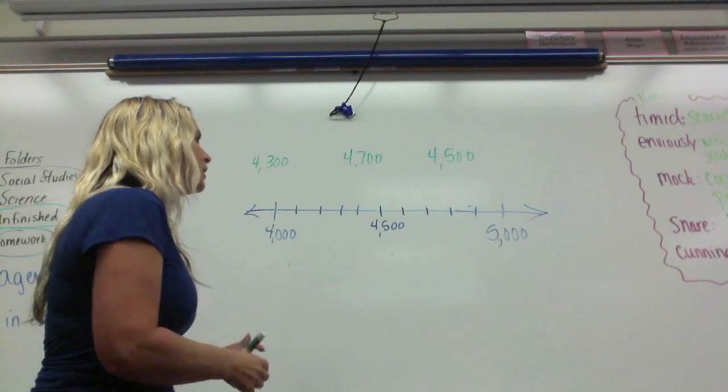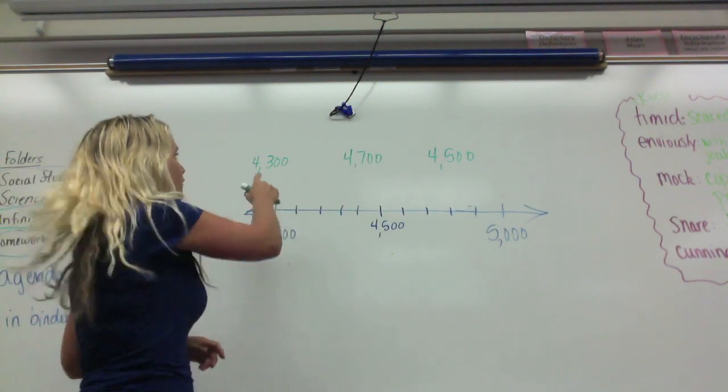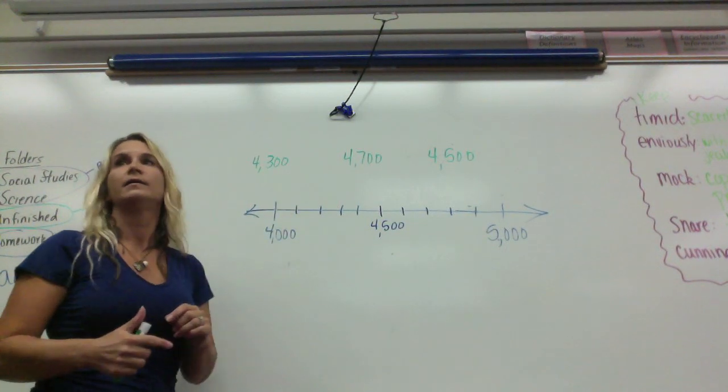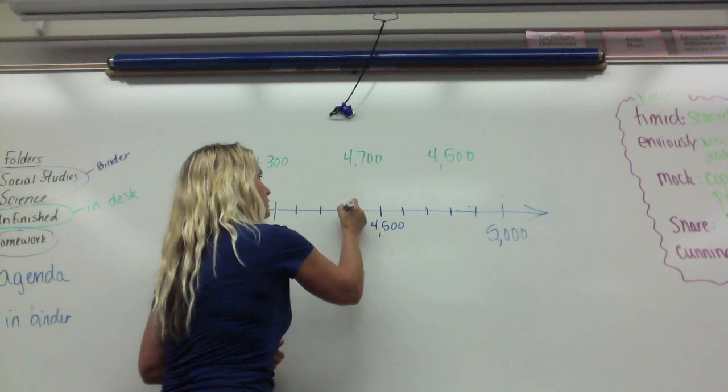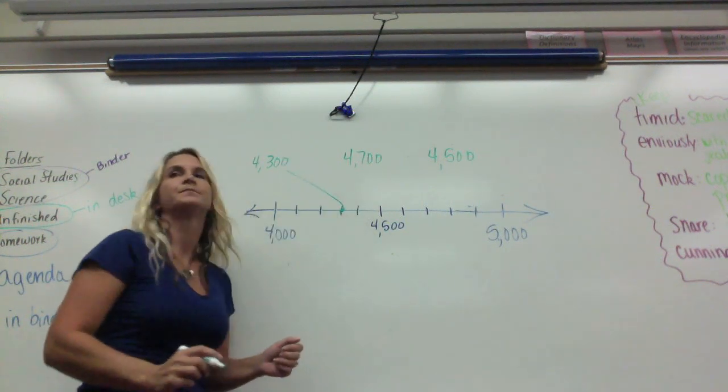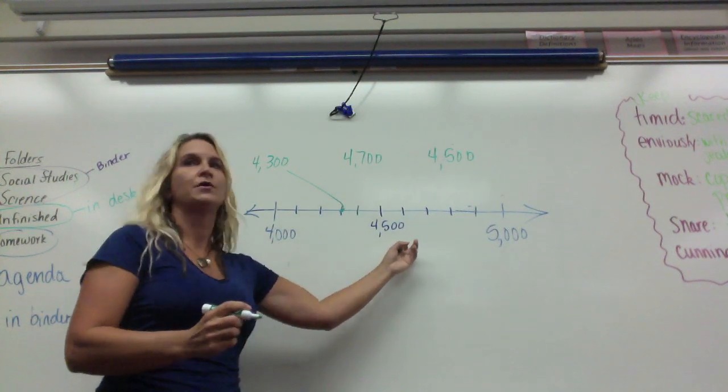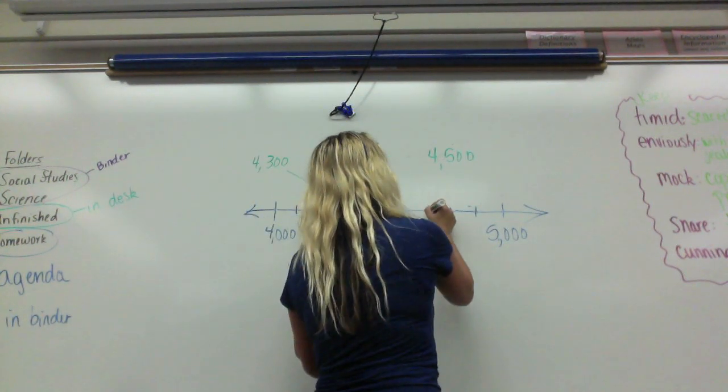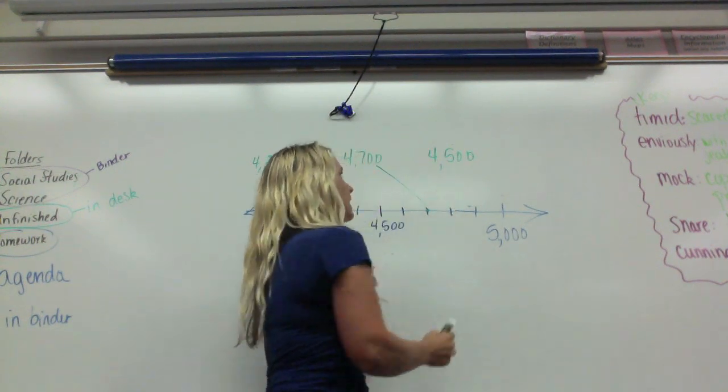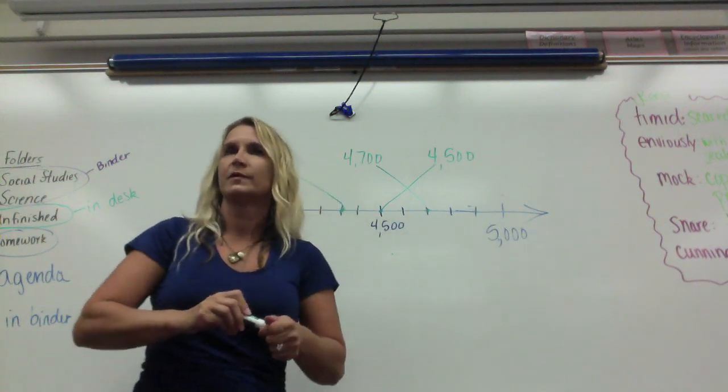Now it's a little easier to plot my dots up here, or my points up here. So 4,300, I'm going to count over 300. One, two, three hundred. So there's that one. I'm just drawing a line. 4,700, I know this is five. So I'm going to say six, seven. That's that one. And then the 4,500 we've already marked. So that's that one.